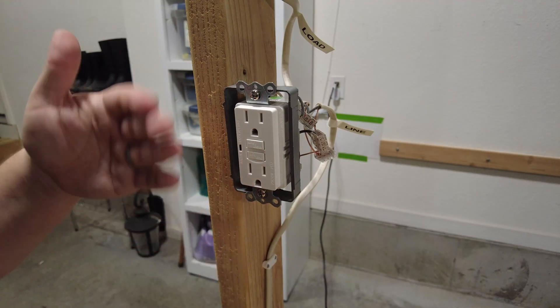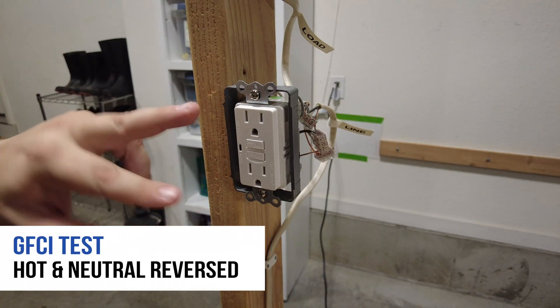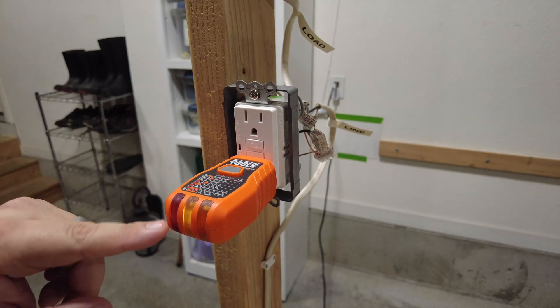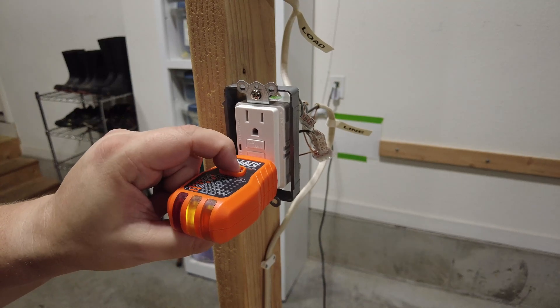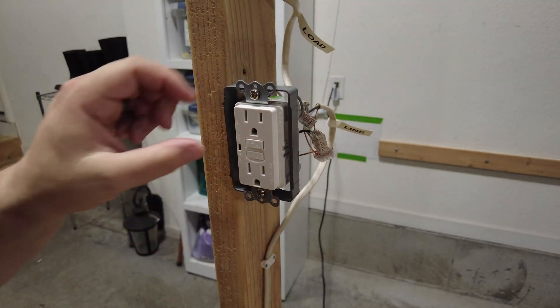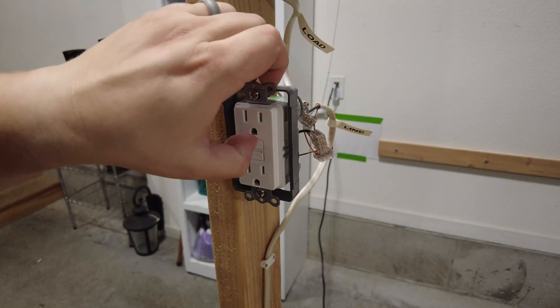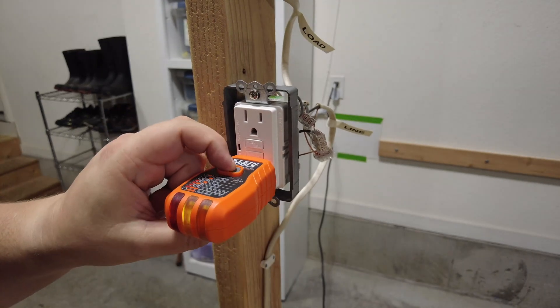Now what if you got the line and the load terminals correct? However, you accidentally reversed the hot and the neutral wires. Will this still provide protection? The first thing you'll notice is this tester shows that the hot and neutral wires are reversed. And if we try to test this, nothing happens. If we trip this manually to test it and we try to reset it, we can. However, it's still not working properly.